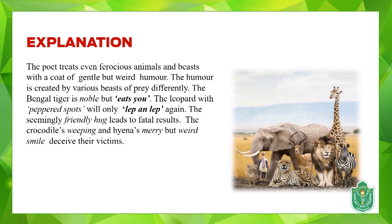For example, the Bengal tiger — basically the Indian tiger — she describes as noble, but it eats you up, so humor is created in a weird but gentle way. A leopard has peppered spots and is a beautiful-looking animal, but it will only 'lep and lep again' — she uses 'lep' instead of 'leap' as a poetic device called poetic license, just to make it rhyme. The seemingly friendly hug of the bear looks friendly but leads to death.